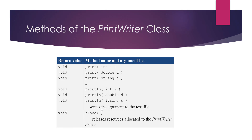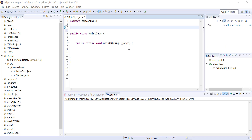We also have the close method, which releases all resources given to the PrintWriter object. This is a really important method — if we do not close our object, we will not be releasing that file, and we might not see the actual writing that was done using the PrintWriter, as we will see in a bit.